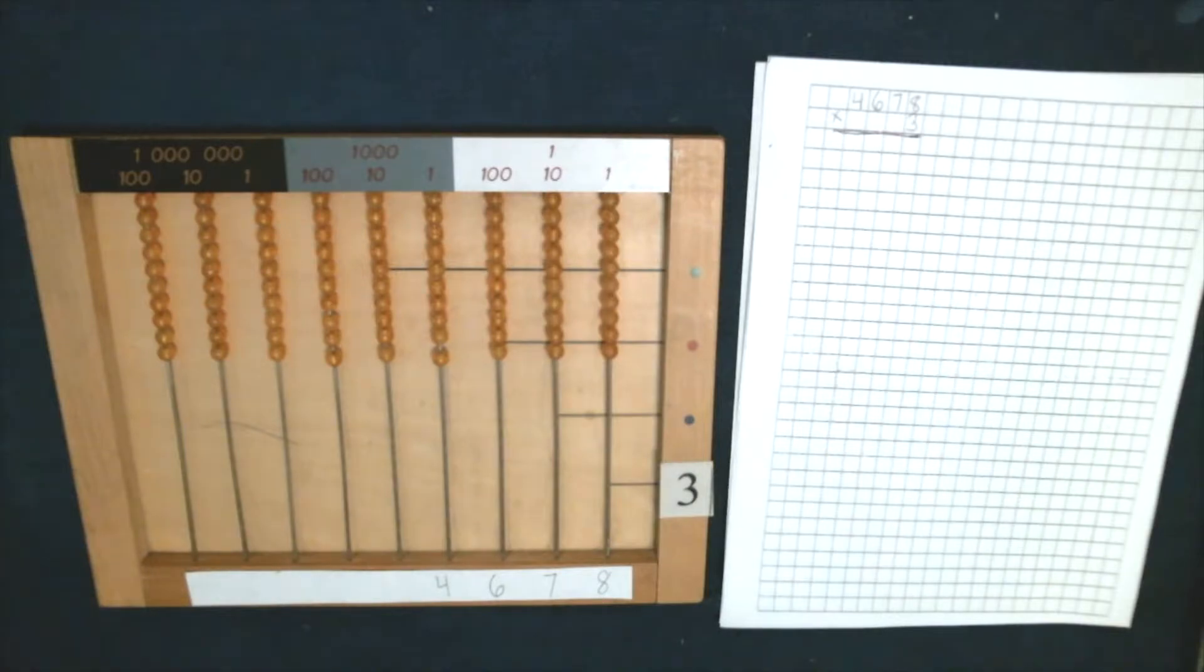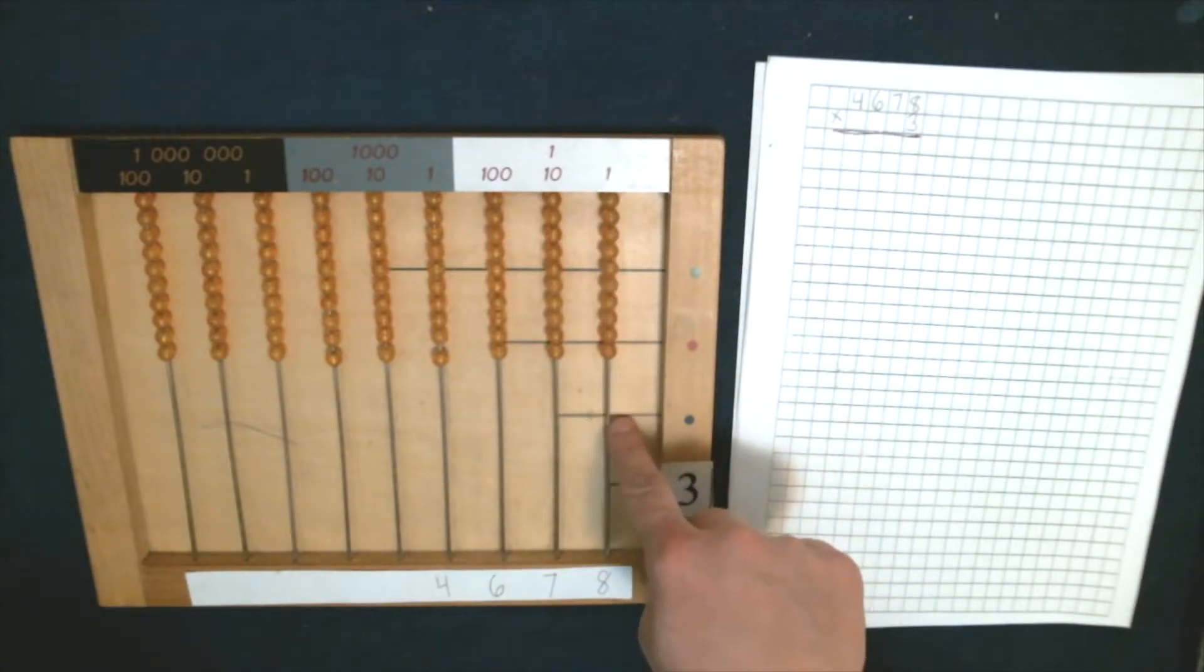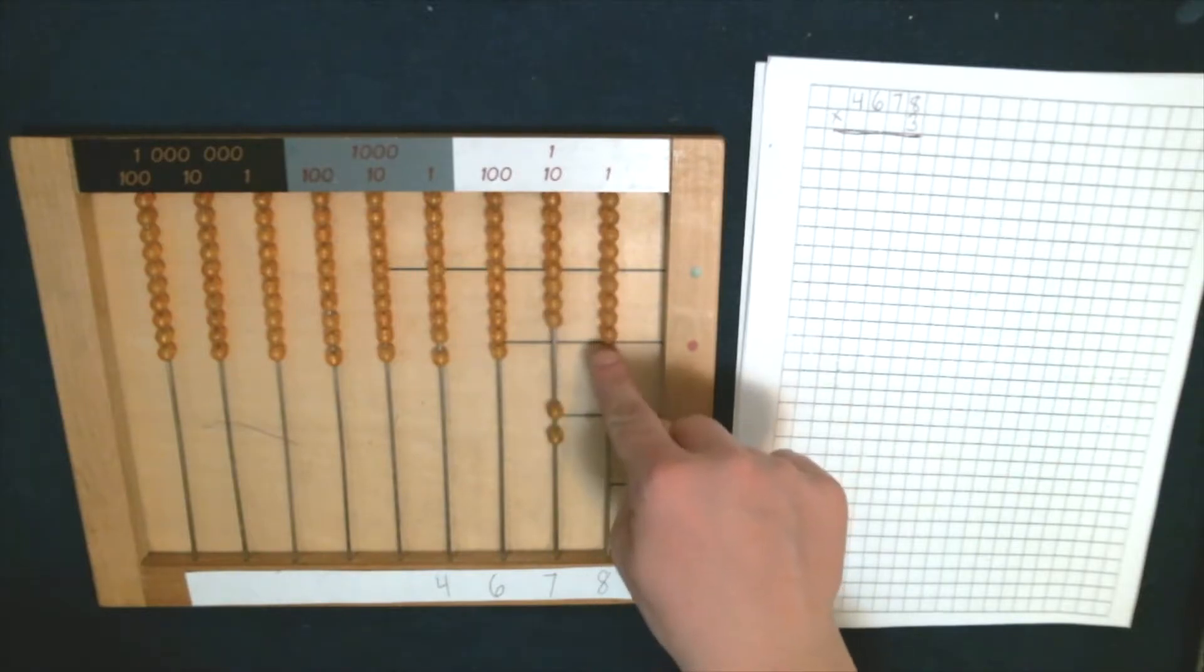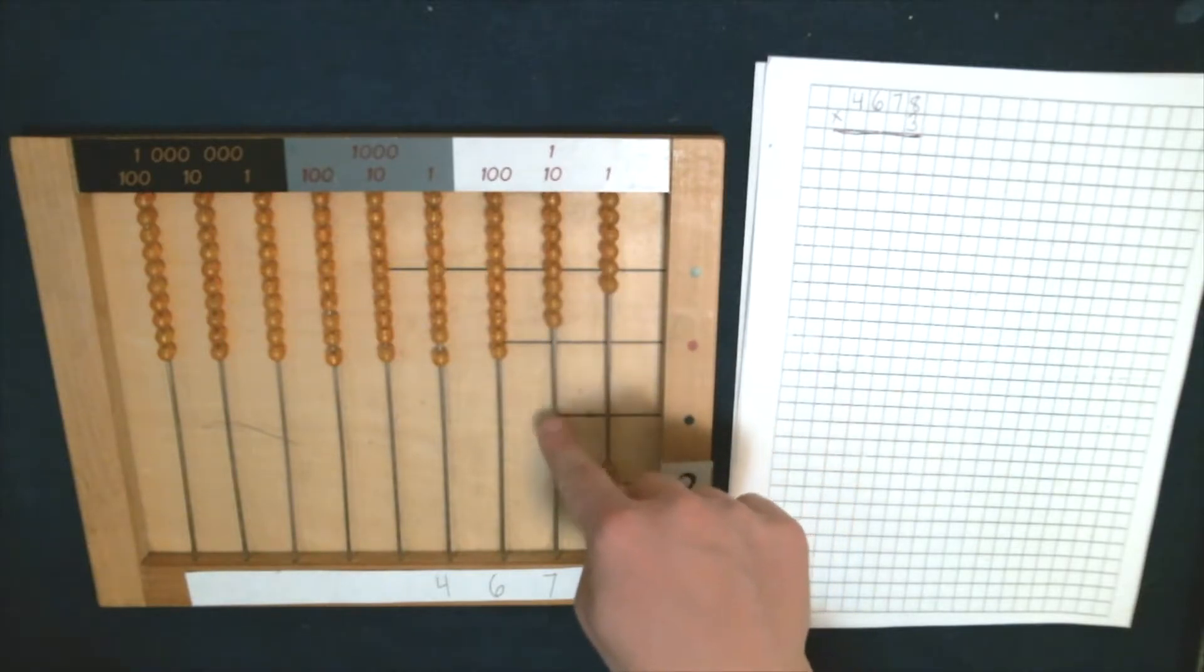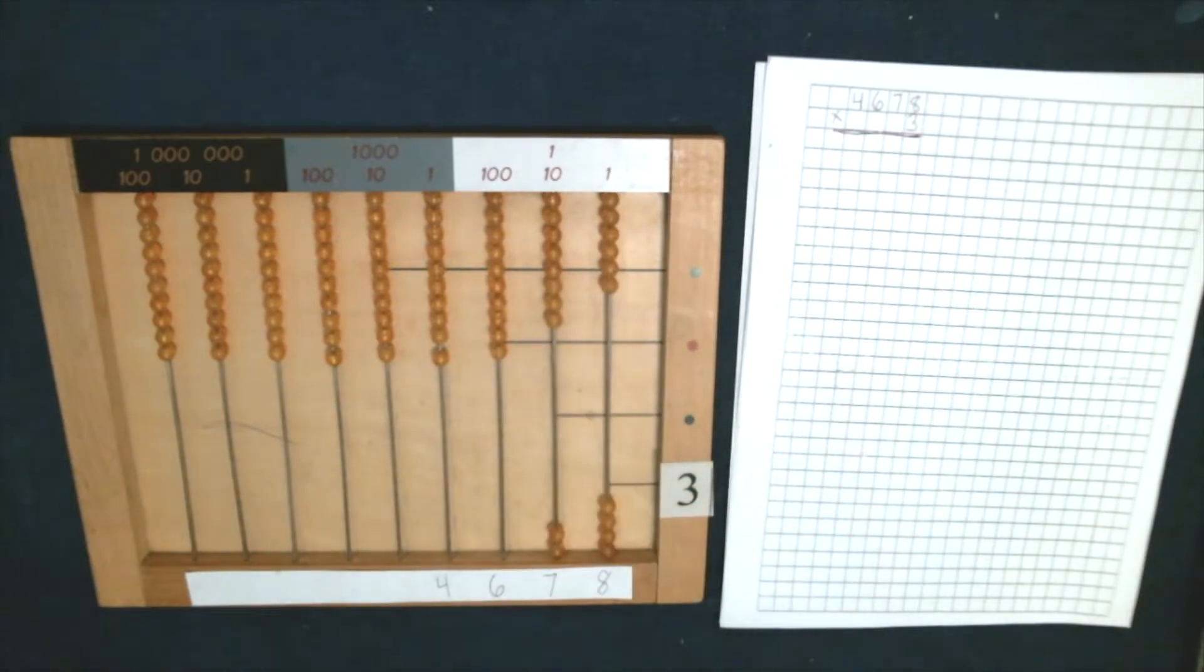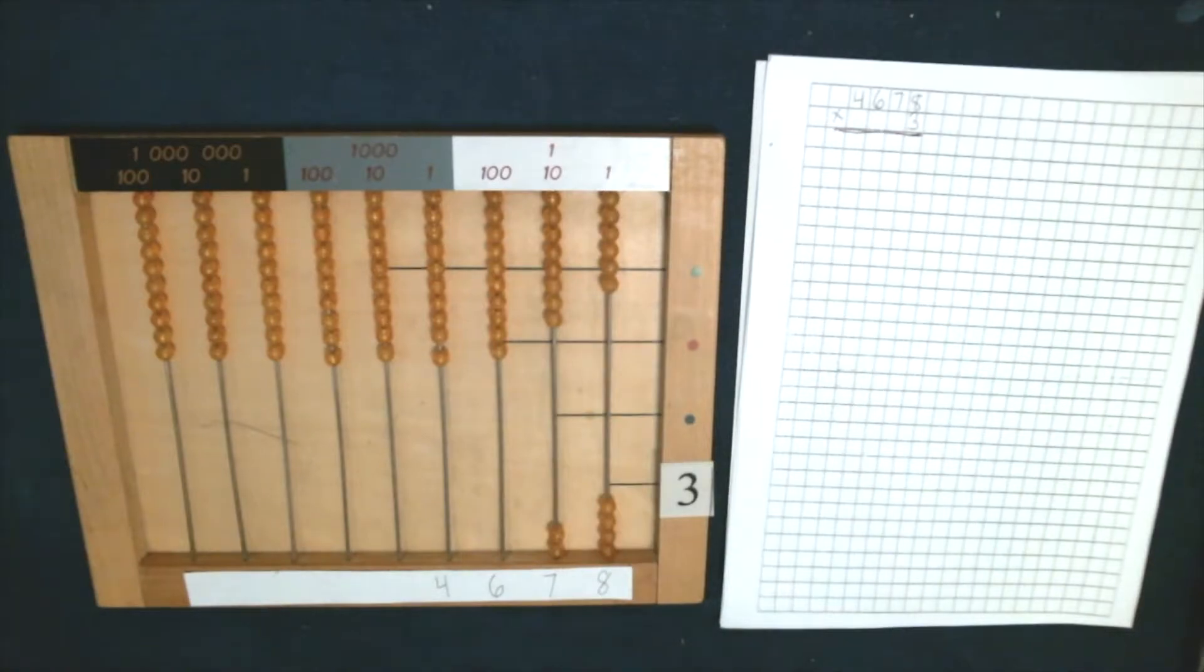We're going to start multiplying units by units, so eight times three. What is eight times three? Eight times three is 24. So I'm going to show you how we put this on. We need 24, two tens, four units. See that? It even looks like the number 24 - two, four.